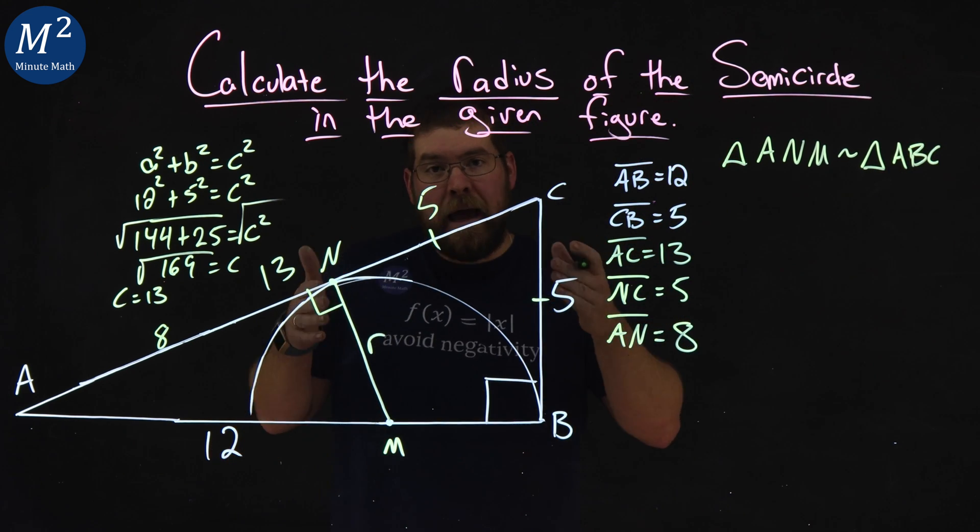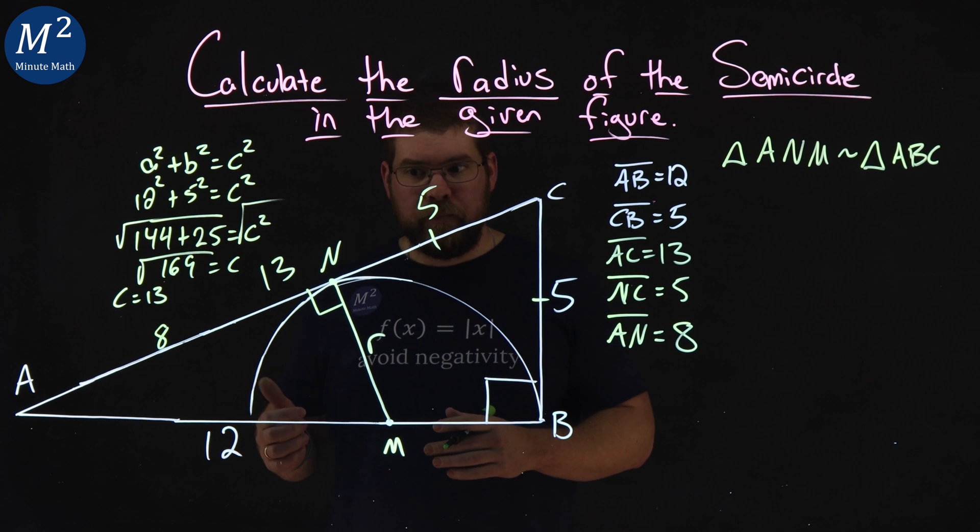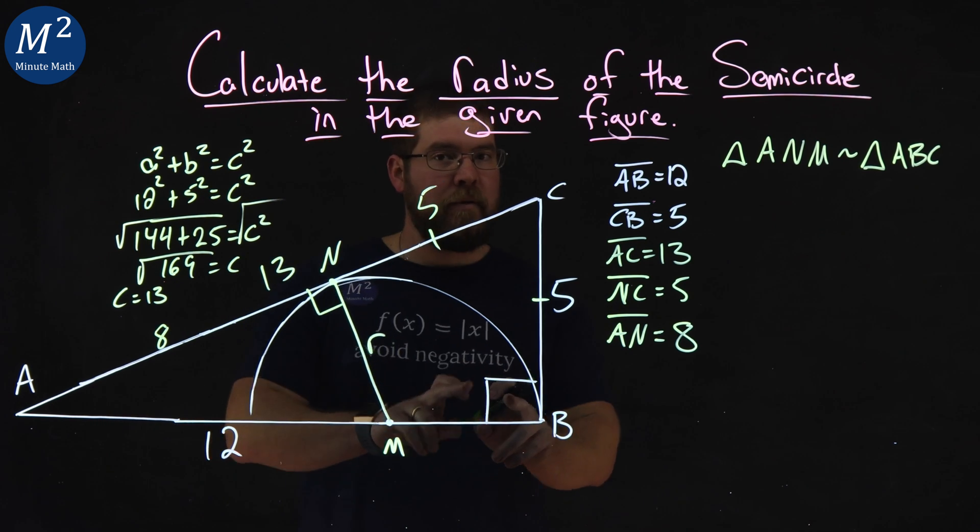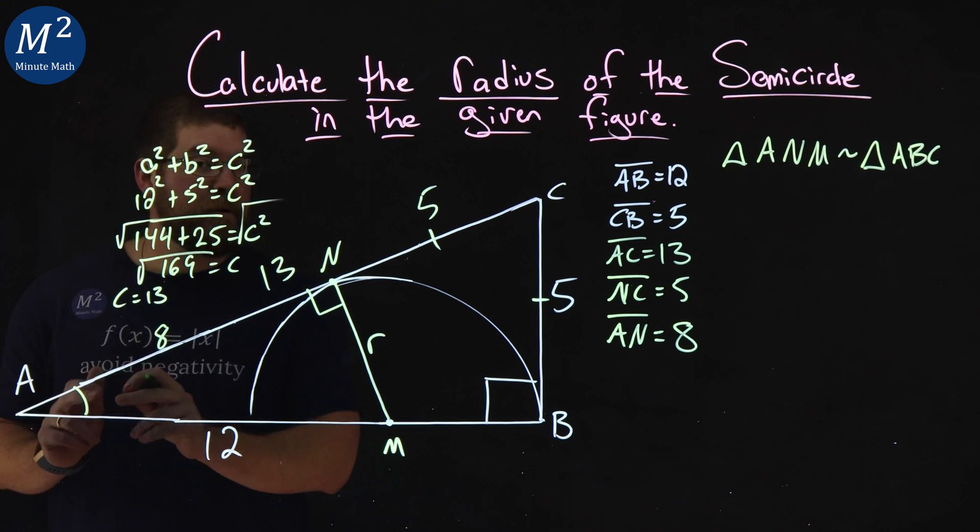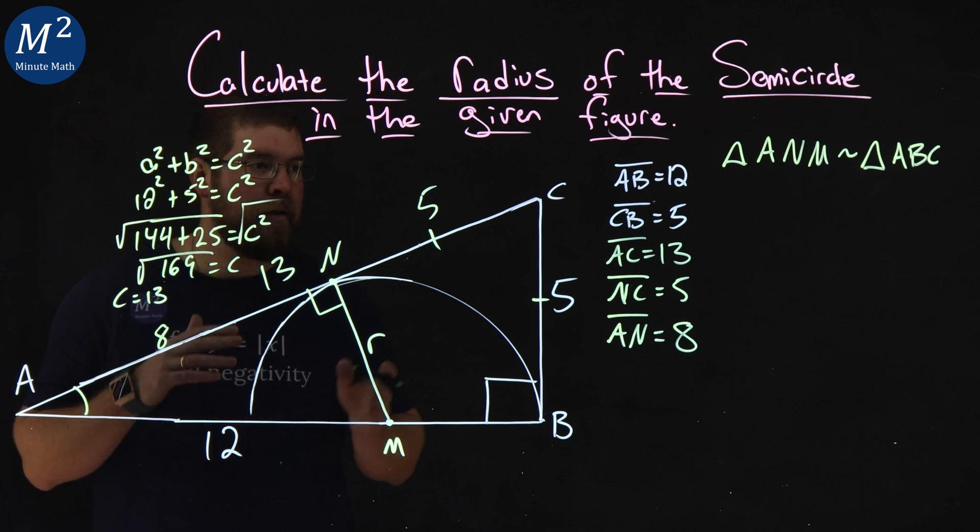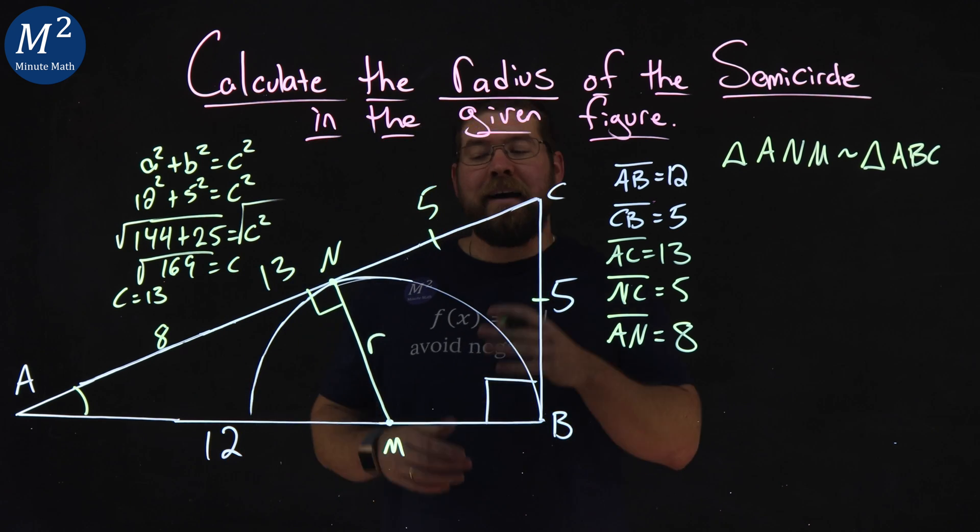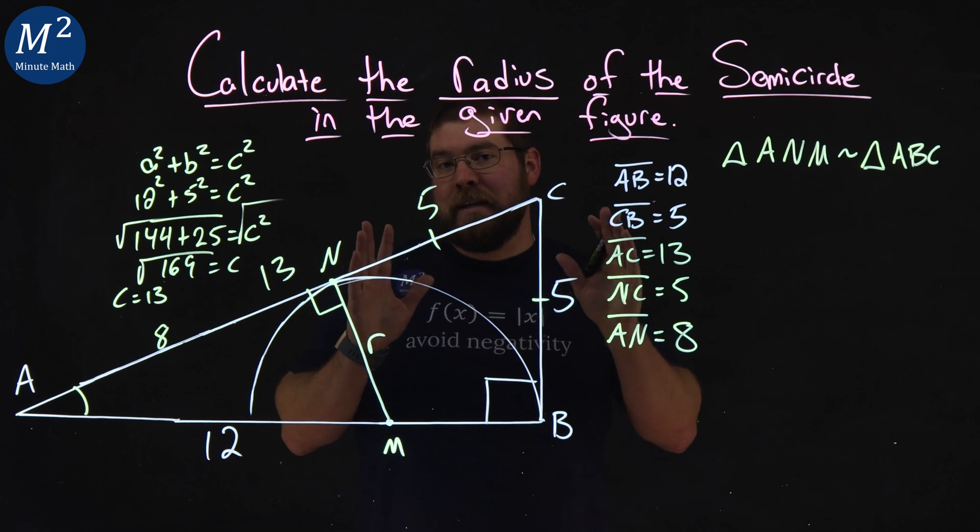Why is that? Well, we have the angle angle theorem. We have a right angle right here. They both share the same right angle, and they both share whatever angle measurement of A is. We have two angles on triangle that are the same. We know the third one's also the same. And we know two triangles must be similar.